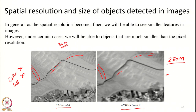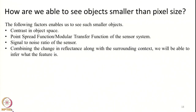How is that possible? It is possible because of certain properties of the object space. This is what we call object space — where the actual object is located on the earth's surface. The first major characteristic is the contrast in the object space.